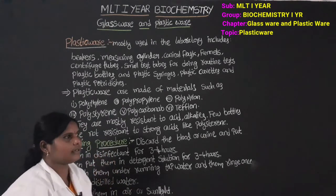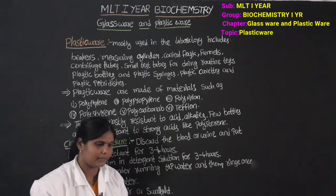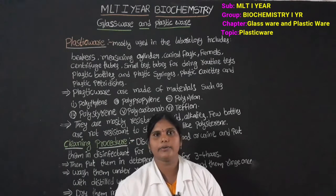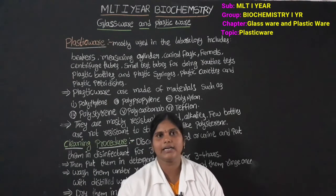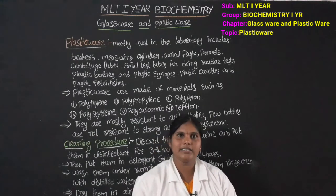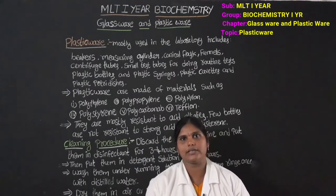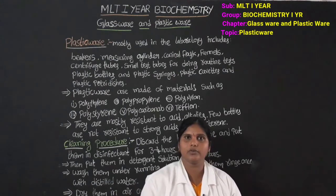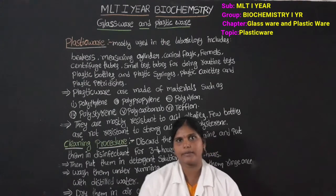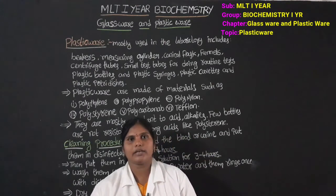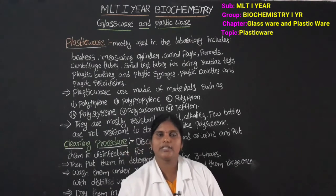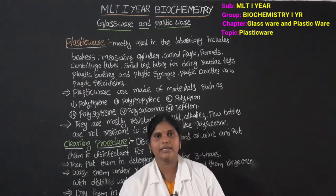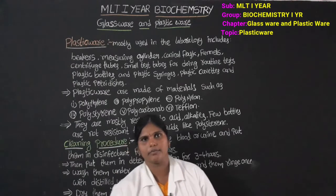Cleaning Procedure for plasticware: First step — after using plasticware with blood or urine samples or reagents, soak them in disinfectant for 3 to 4 hours. Then, remove from disinfectant and place in detergent solution for 3 to 4 hours. Next, wash under running tap water with brushing. Then rinse with distilled water once. Finally, dry them — either air dry or dry in sunlight.